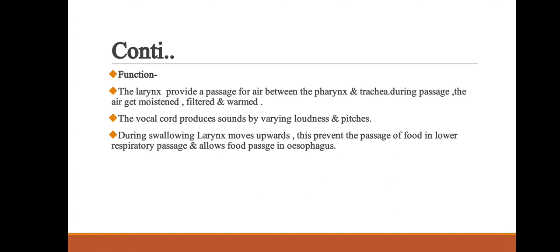First, the larynx provides a passage for air between the pharynx and trachea; during passage, the air gets moistened, filtered, and warmed. The vocal cord produces sound by varying loudness and pitch. Last, during swallowing, the larynx moves upward, which prevents the passage of food into the lower respiratory passage and allows food to pass into the oesophagus.